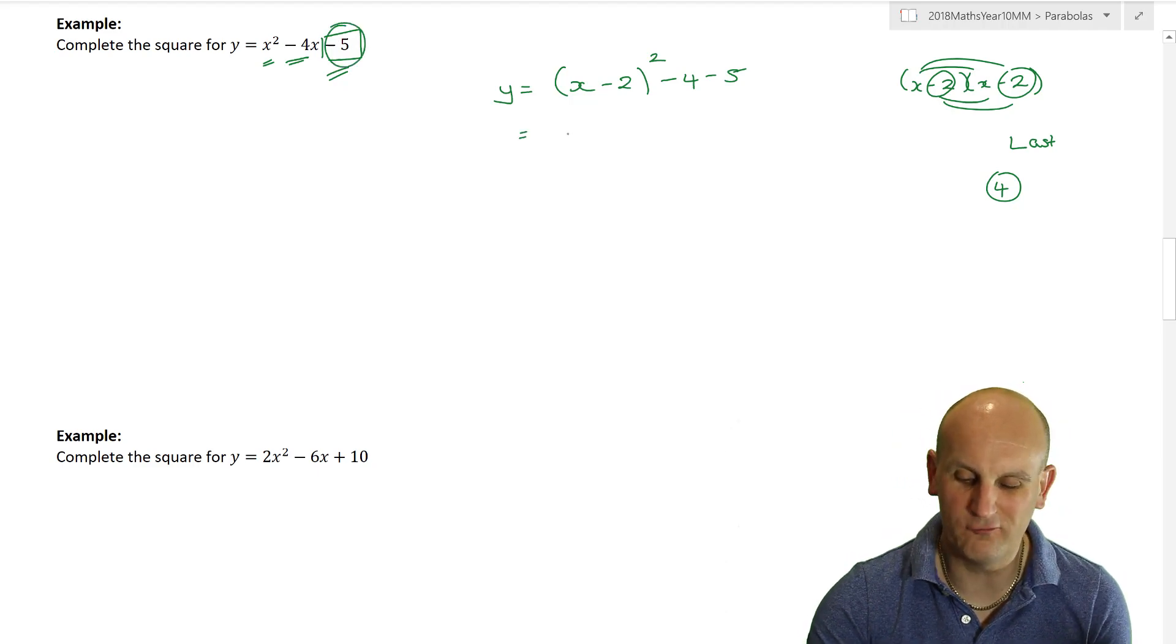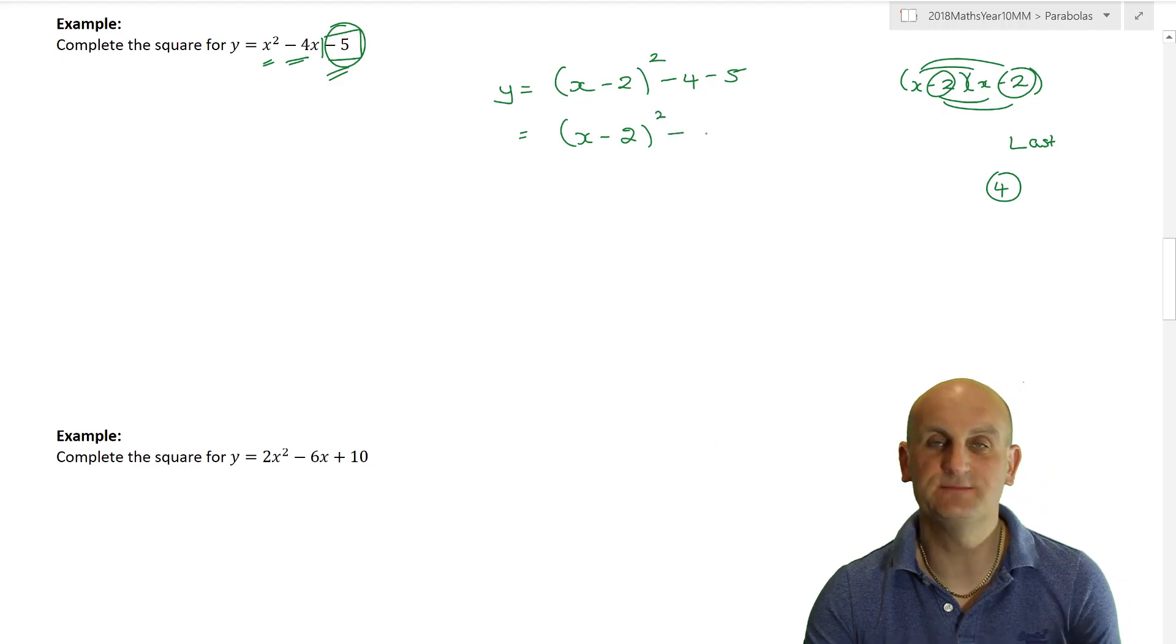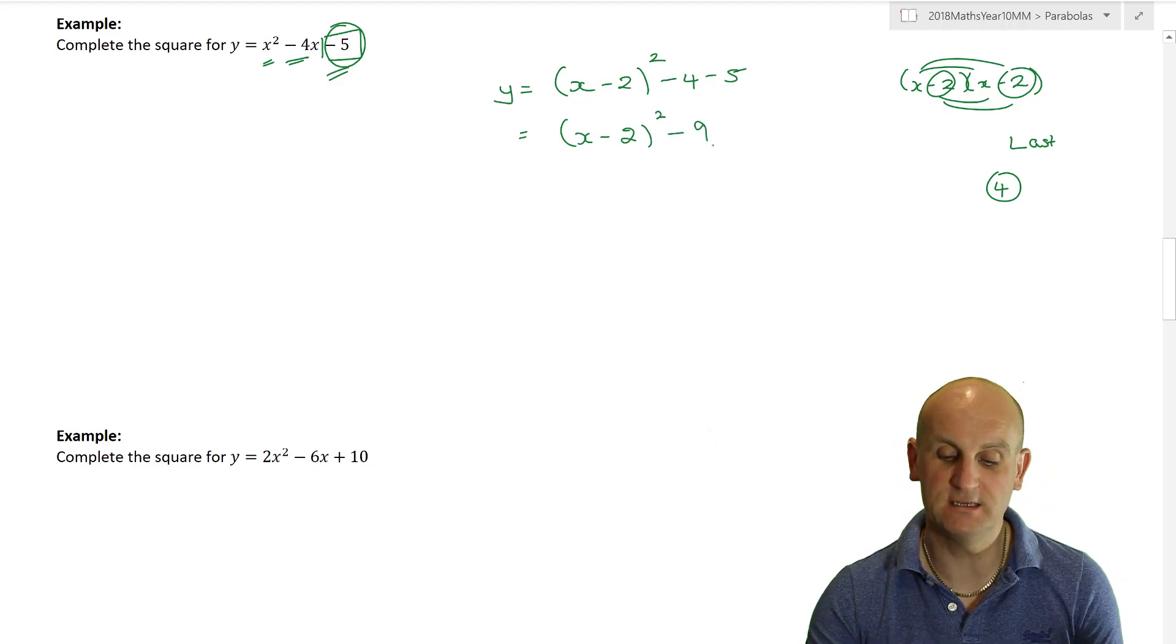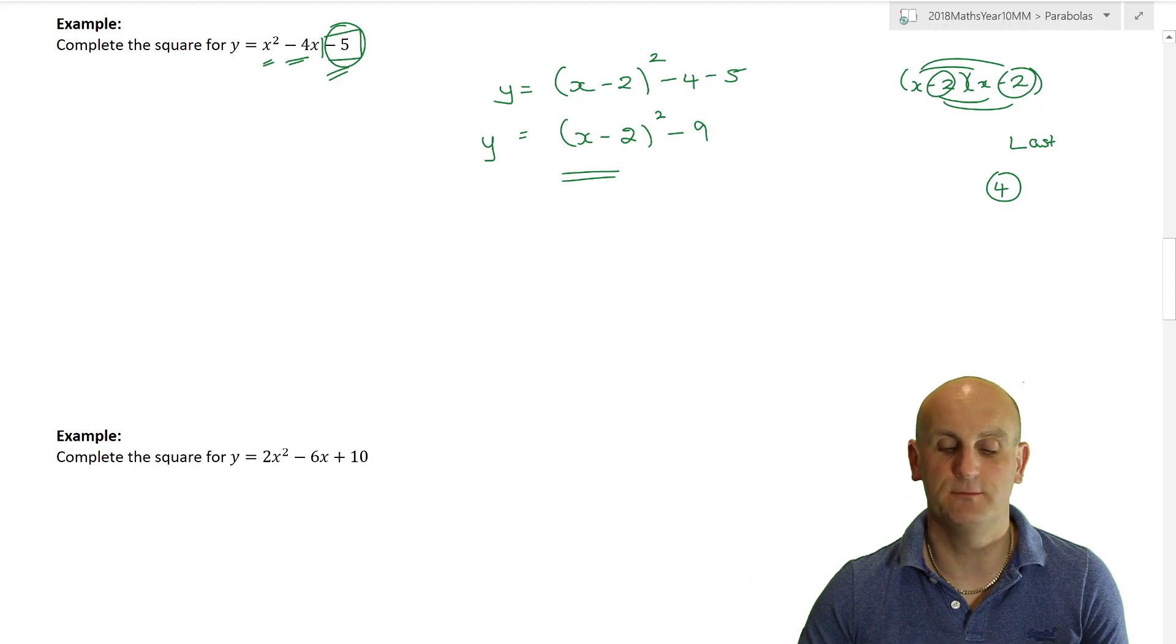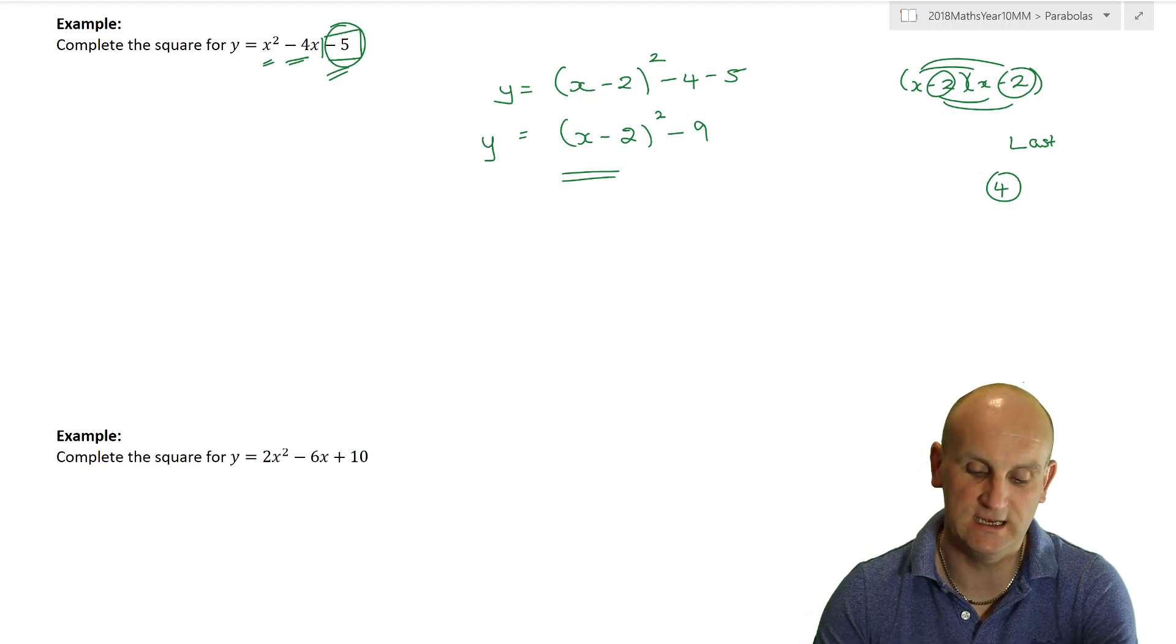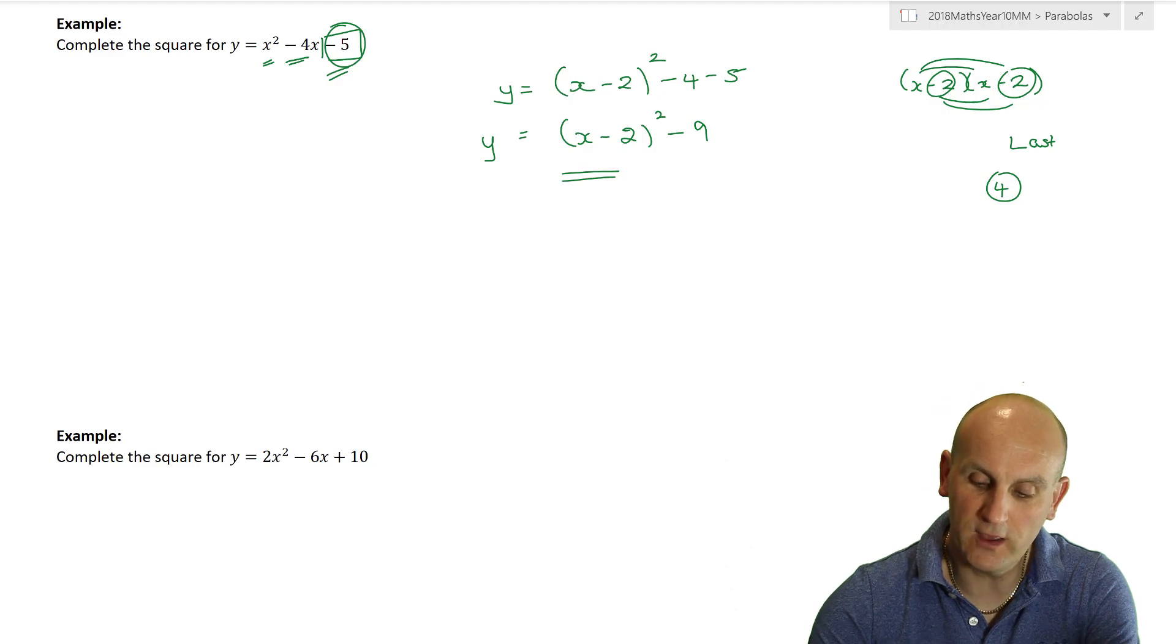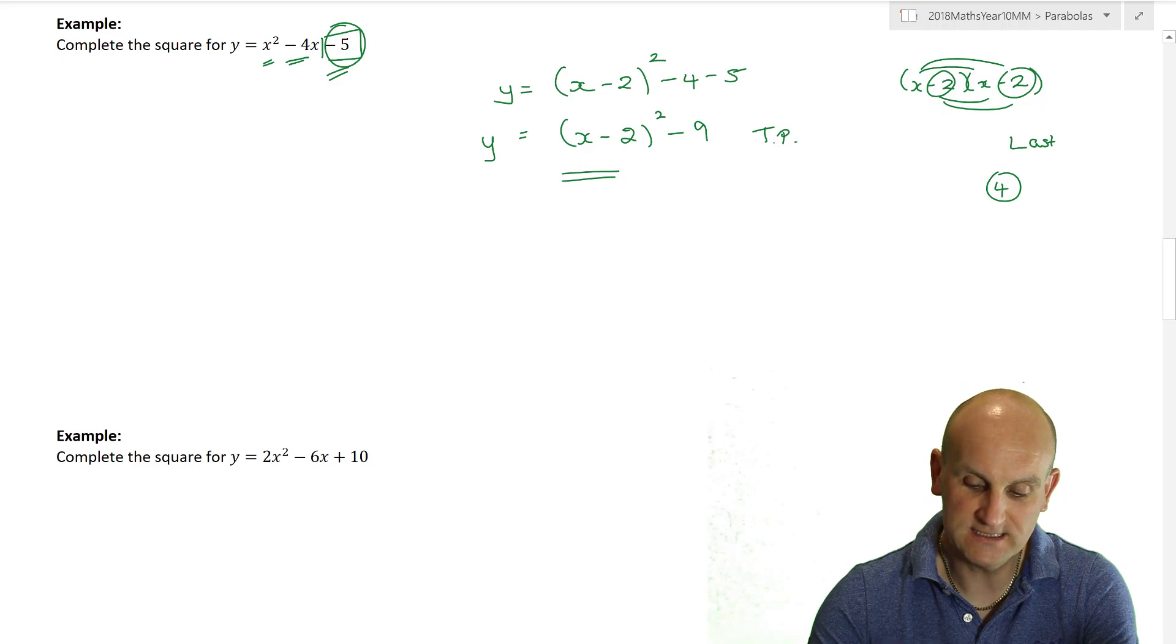So first thing I need to do is take away the 4 that I don't need. That's this 4 that's created here. I don't need it. So let's get rid of it. And then I'm going to take away another 5, which gives me this value here. I have to admit that's not really the way I tend to do it. But I get x minus 2 all squared minus 9 is my completed the square form.